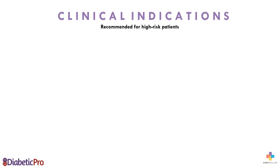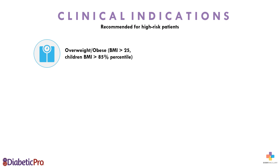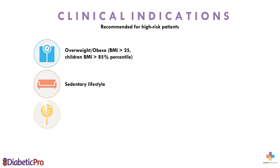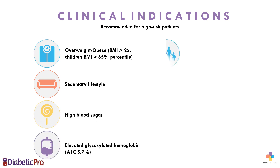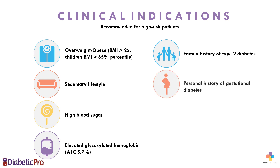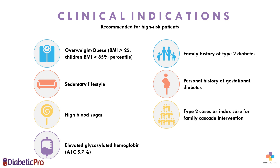Type 2 diabetes genetic risk assessment testing is recommended for high risk patients, including overweight and obese patients with a BMI greater than 25, or children whose BMI is in the 85th percentile or greater, patients with a sedentary lifestyle, high blood sugar, elevated A1C, those who have a family history of type 2 diabetes, a personal history of gestational diabetes, or for type 2 diabetes patients as an index case for family cascade intervention.